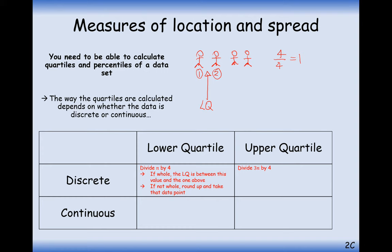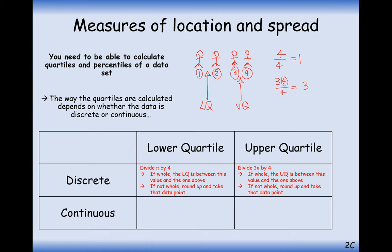For the upper quartile, it works in a very similar way. You do 3N divided by four, and if it's whole, you take that number and the number above it and find the in-between marker. So for four data points, three-quarters of four is three, so you'd go in between the third and fourth data points. If it's not whole — say N equals five — you do 15 divided by four which is 3.75, round up, and take the fourth data point. For continuous data, it's simpler: divide N by four and just take that data point, and for the upper quartile do 3N divided by four and take that data point.